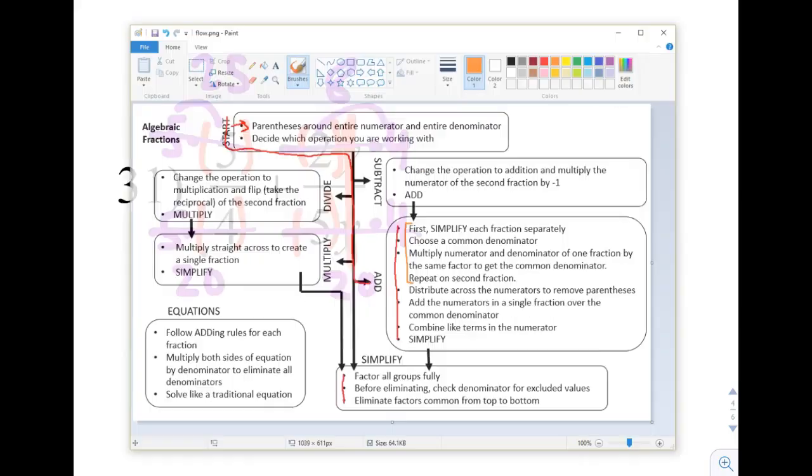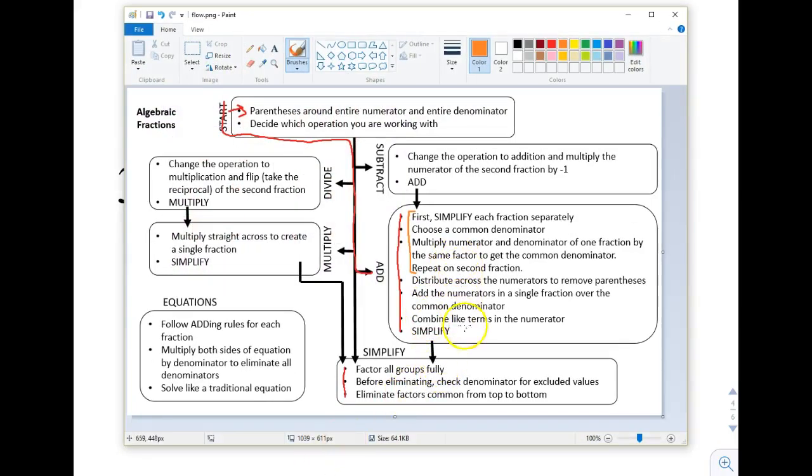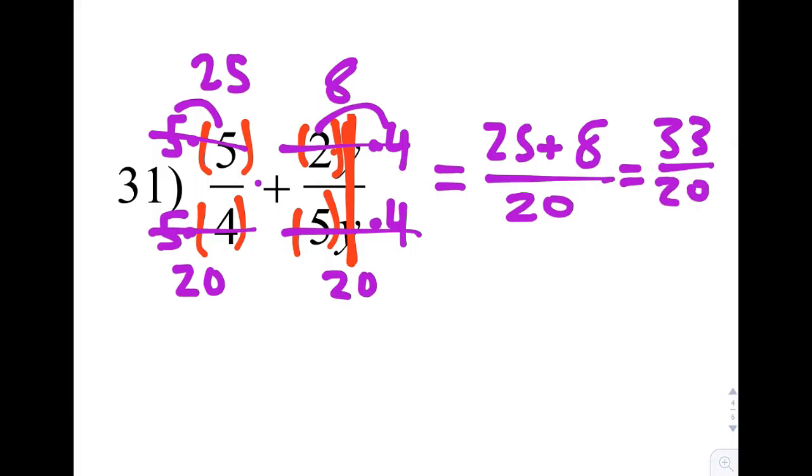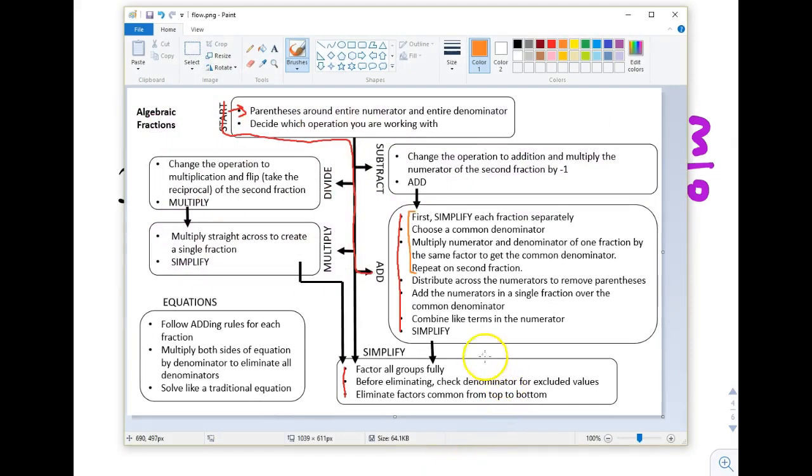Looking at these two fractions and going back to our chart, it says add the numerators in a single fraction over the common denominator. So we're going to create one fraction over our common denominator, which is 20 in this case. That is our 25 plus our 8, both in our numerator. And when we add those together, since they are like terms, they're both just numbers, we're going to get 33 all over 20.